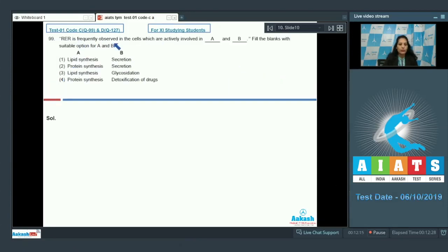Question number 99: RER is frequently observed in the cells which are actively involved in A and B. Fill the blanks with suitable option for A and B. RER is the rough endoplasmic reticulum and it is observed in the cells which are actively involved in protein synthesis and secretion. Not the lipid synthesis because lipid synthesis is related to the SER or the smooth endoplasmic reticulum. Detoxification of drugs is also done by the SER. So the correct option for the given question is option number two.